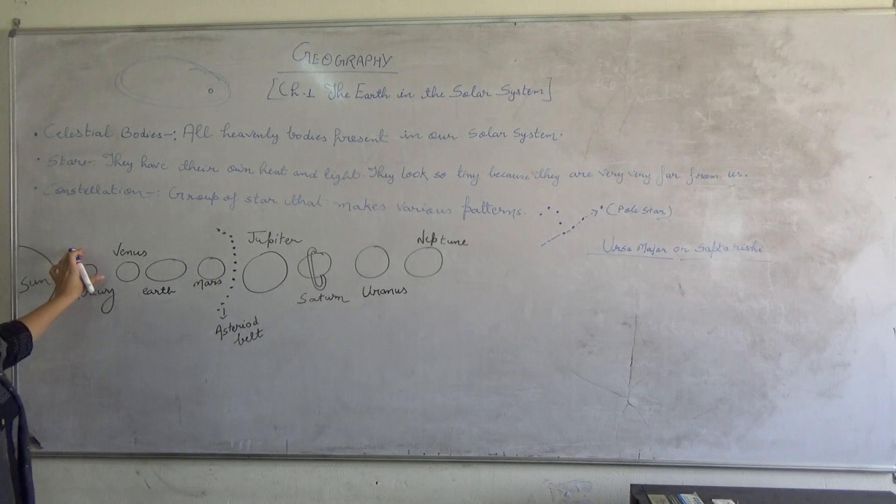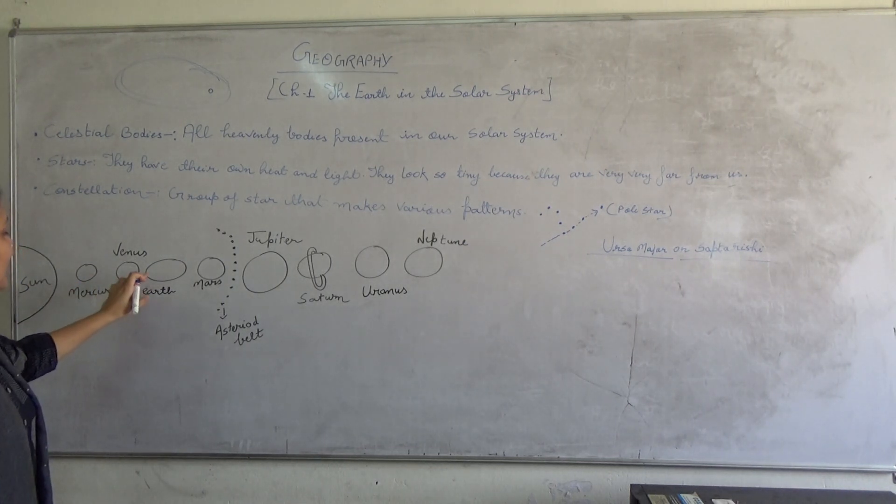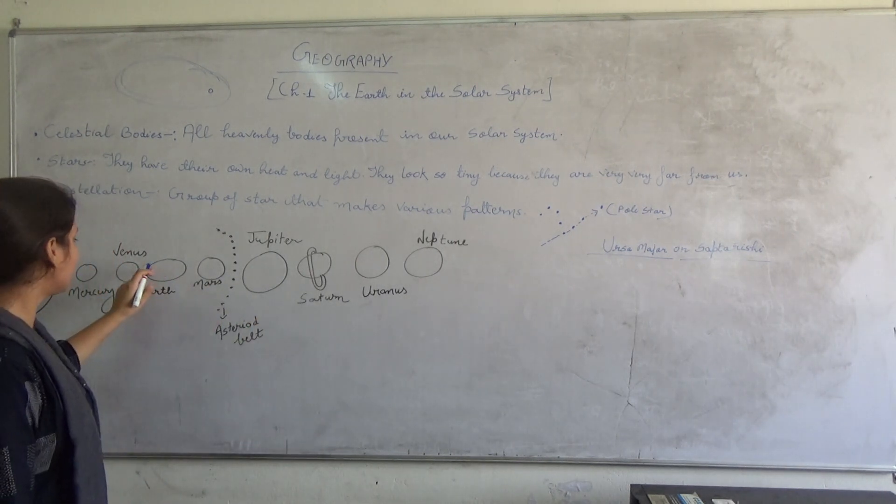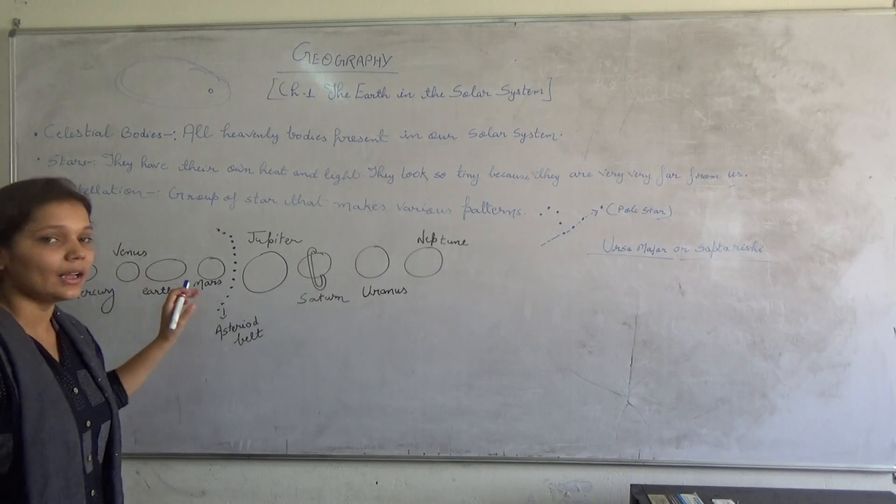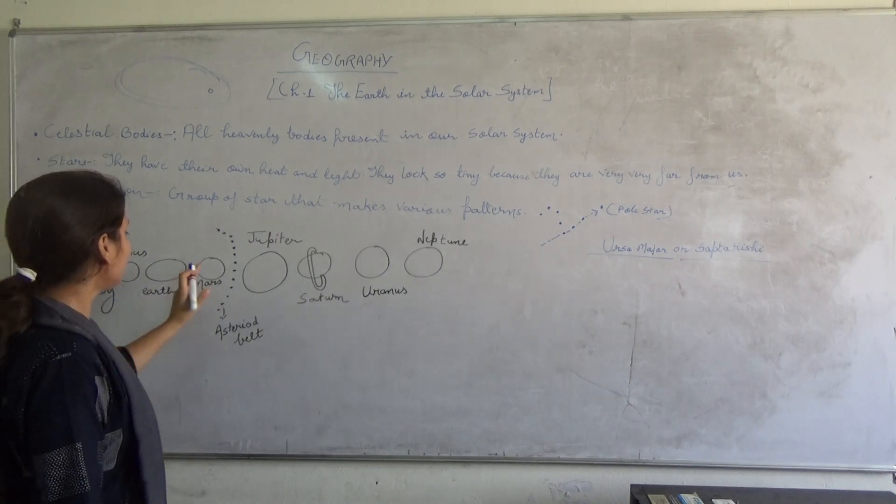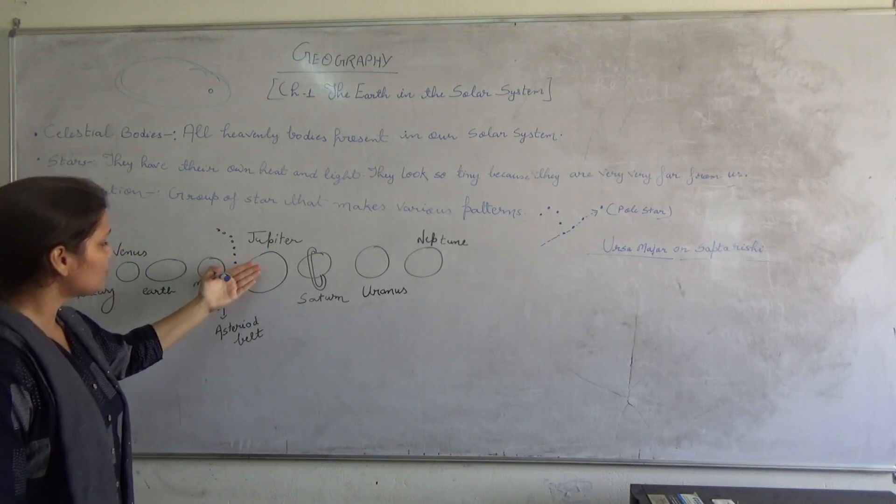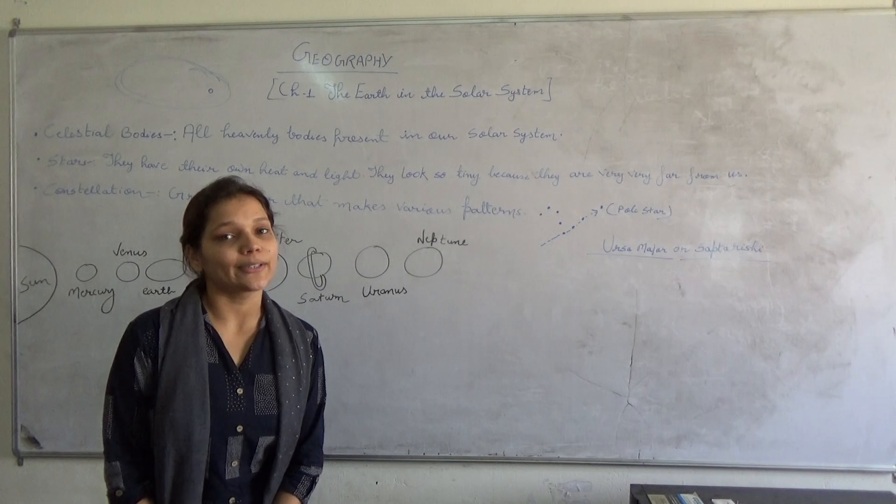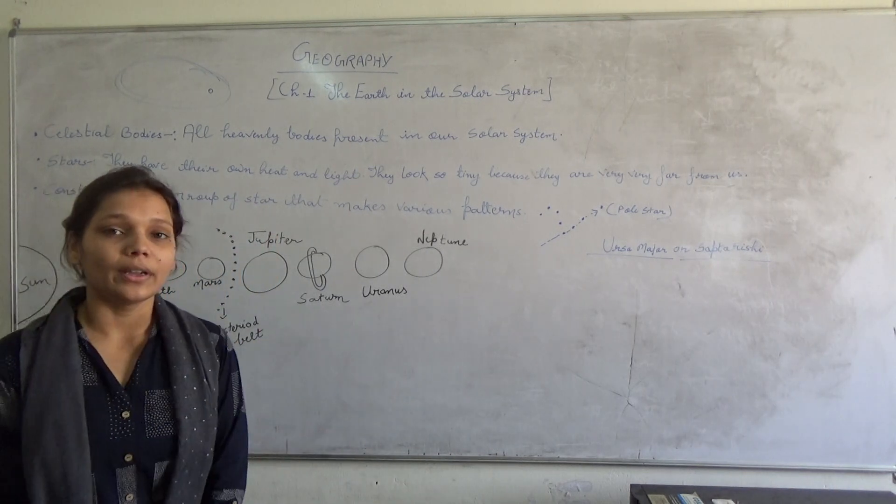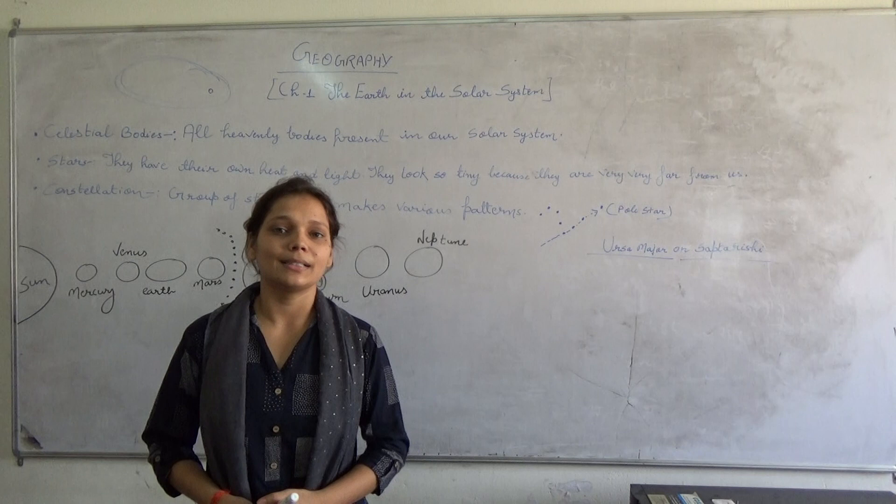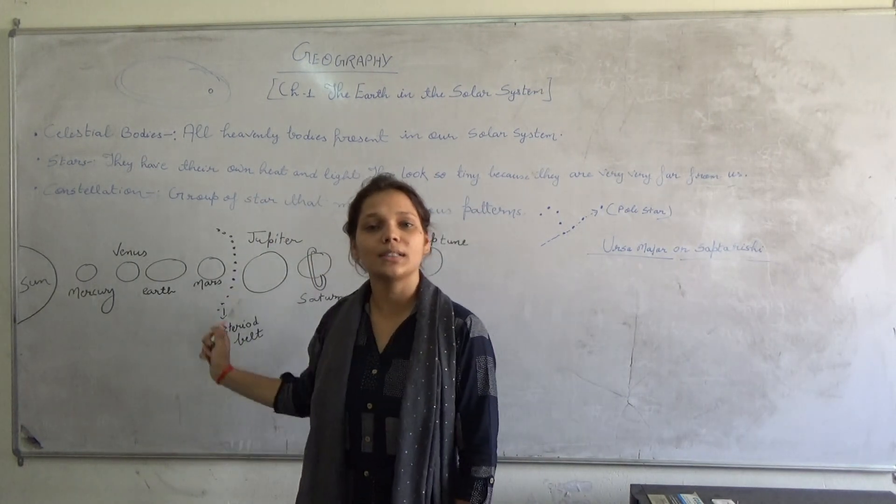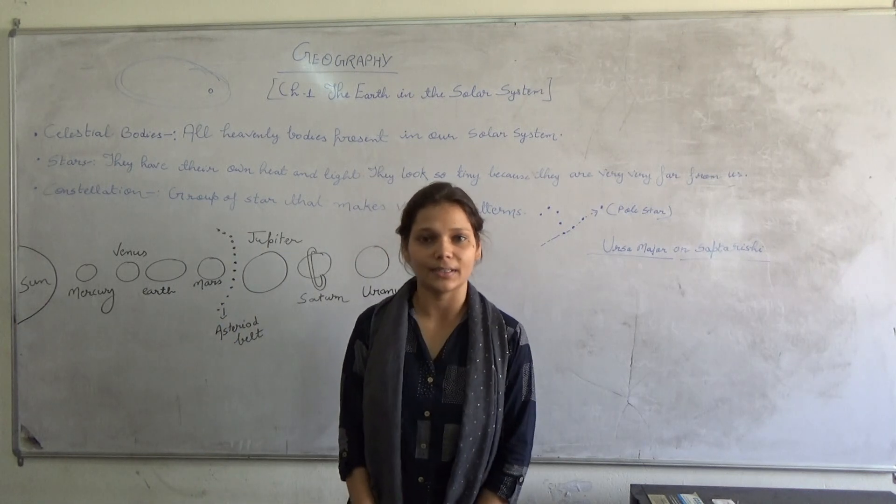Next, Mercury. Mercury is the smallest planet. Then Venus. Venus and Earth are called as twins because they are same in their shape and size. Then Mars and Jupiter. Between Mars and Jupiter, a belt is present. This belt is called as asteroid belt. What are asteroids? Asteroids are some tiny particles present in our solar system. They are also revolving around the sun just like our planets.